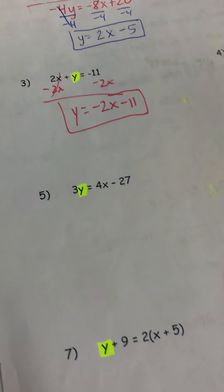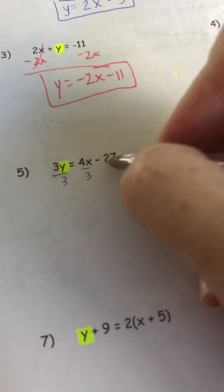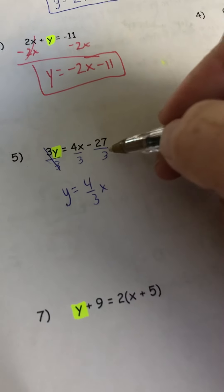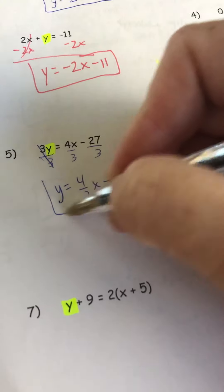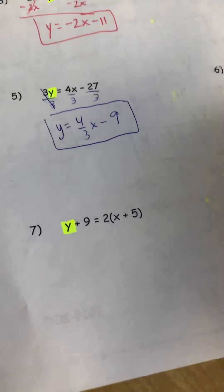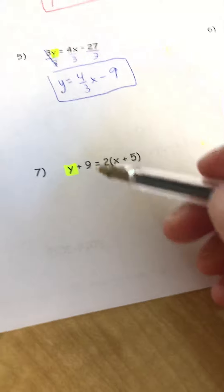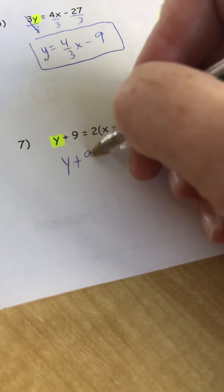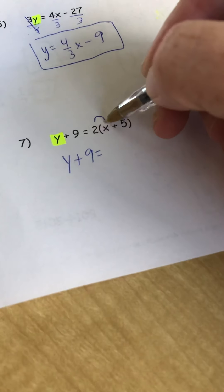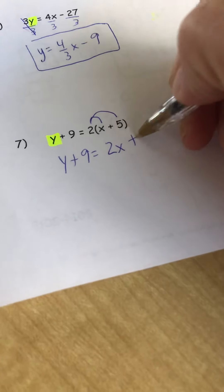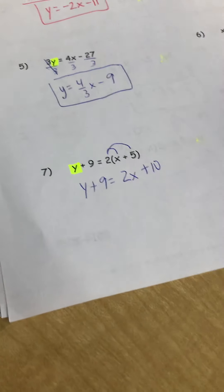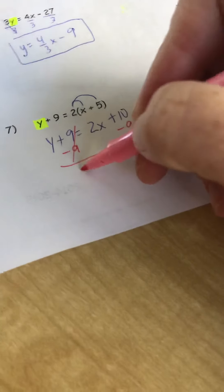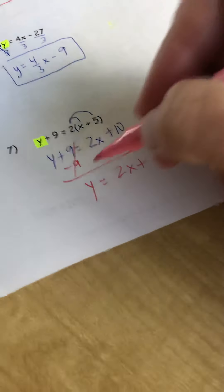Number 5 says 3 times y, so divide everything by 3. y equals 4 thirds x, and 27 divided by 3 is 9, so y equals 4 thirds x plus 9. For the last one, notice the parentheses — take care of that first. Distribute: 2 times x is 2x, and 2 times 5 is 10. Then subtract 9 to get rid of the plus 9, combining like terms. So y equals 2x plus 1. Thank you for joining us today.